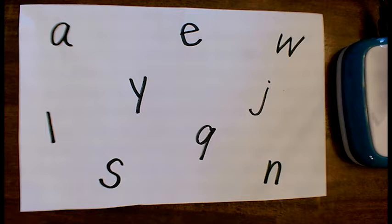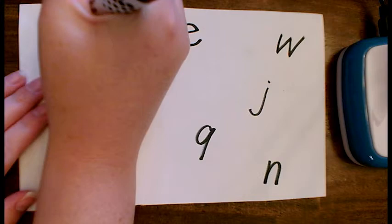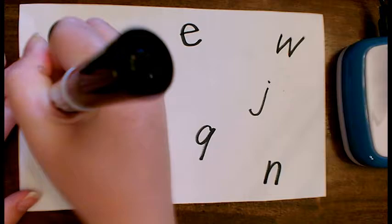Now that we have all of our letters placed on our paper, if your letters are skinny like mine, you want to just trace around them one or two times with your marker to make them nice and thick. So I am just tracing right around my letters that I already have to make them a little thicker so that they stand out more.